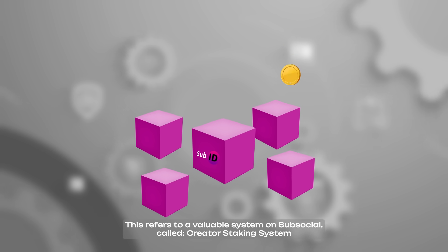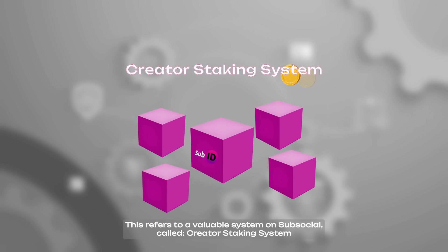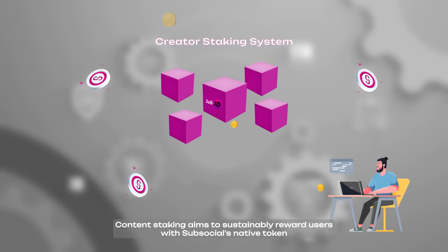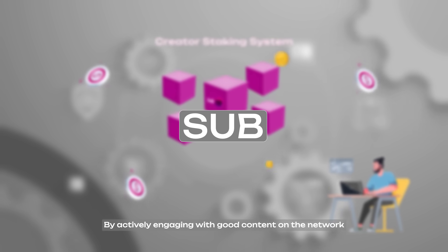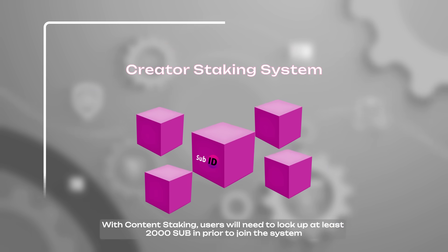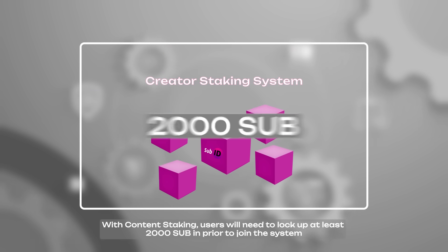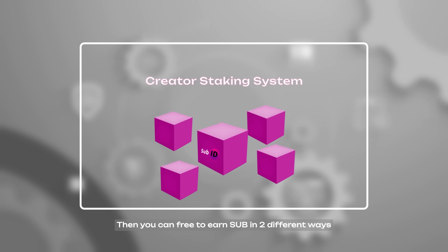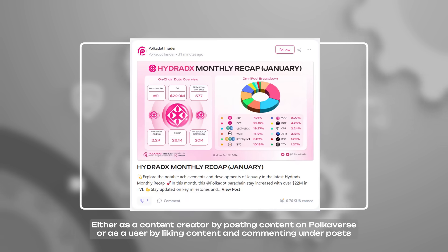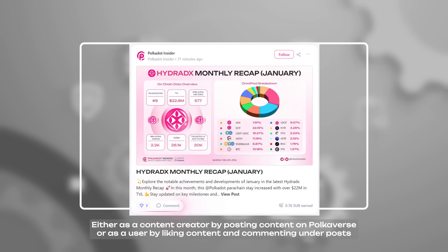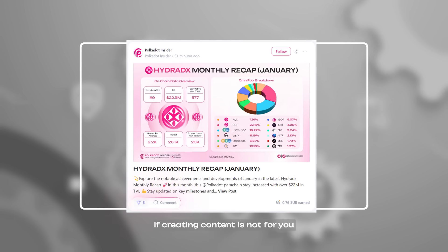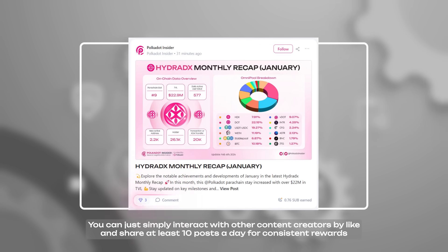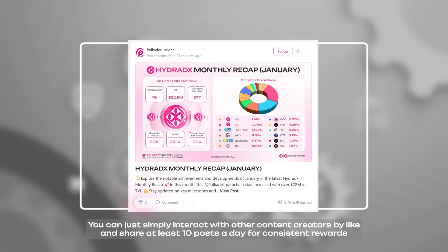This also refers to a valuable system on SubSocial called Content Staking, which aims to sustainably reward users with SubSocial's native token by actively engaging with good content on the network. With Content Staking, users need to lock up at least 2,000 SUB to join the system. Then you can earn SUB in two ways: either as a content creator by posting content on Polkaverse, or as a user by liking content and commenting on posts. You can also simply interact with other creators by liking and sharing at least 10 posts a day for consistent rewards.